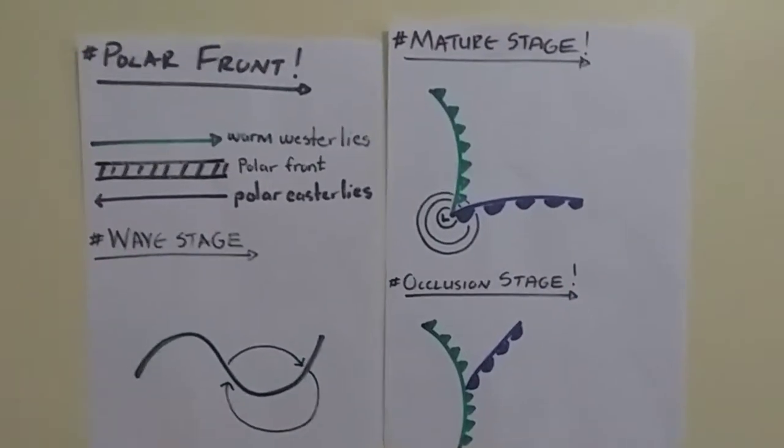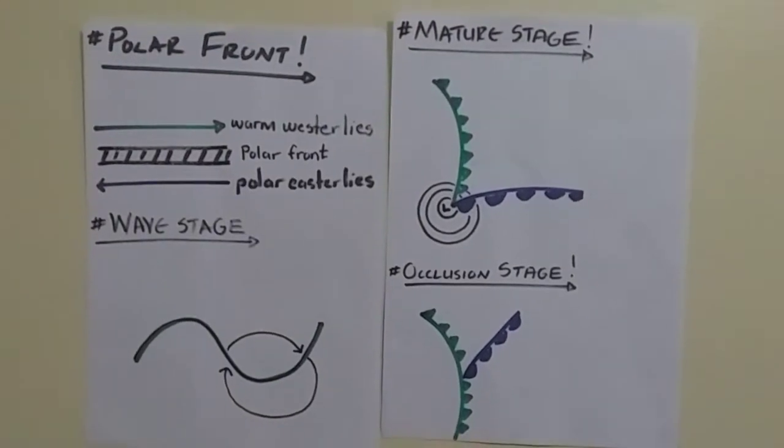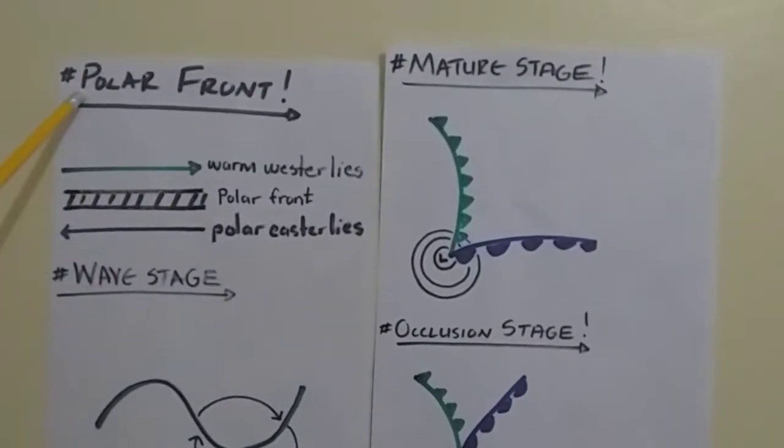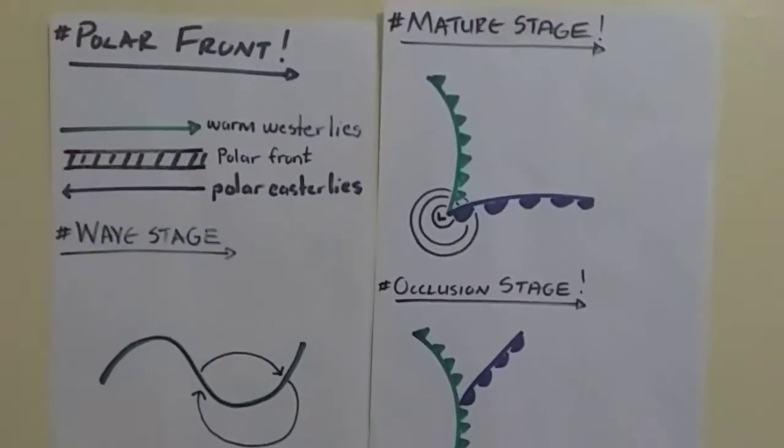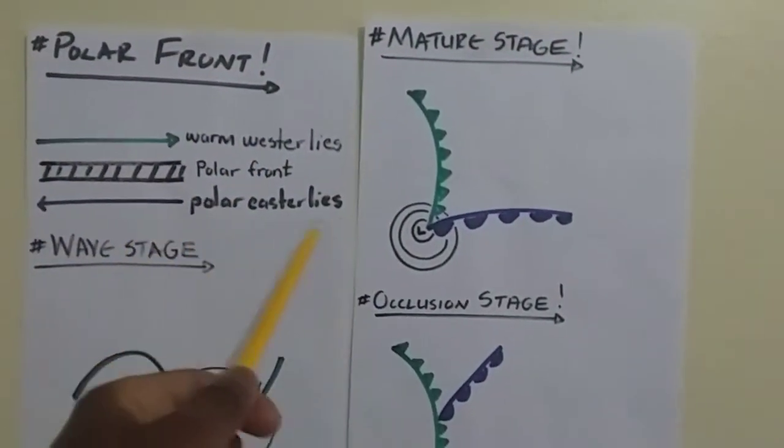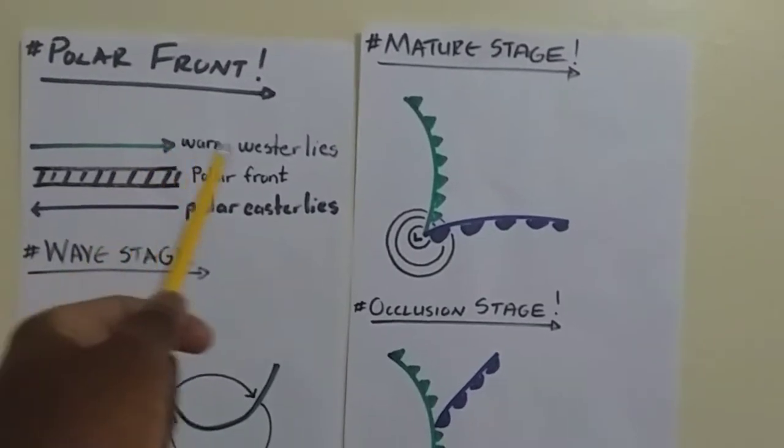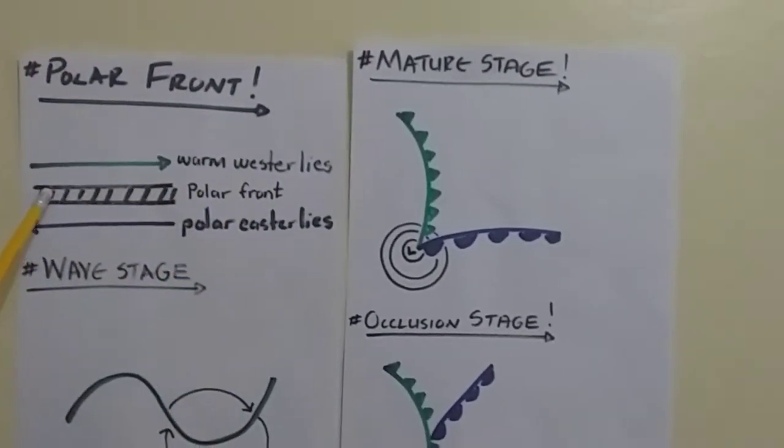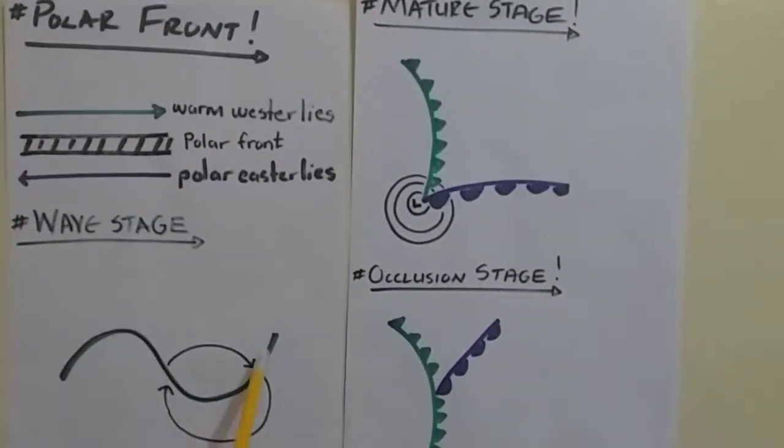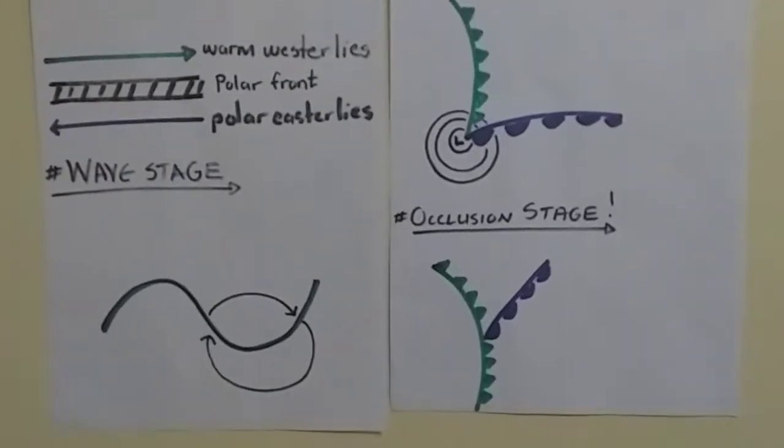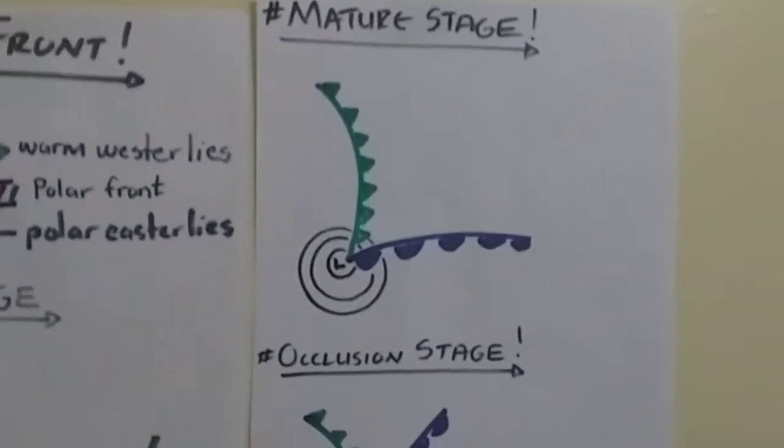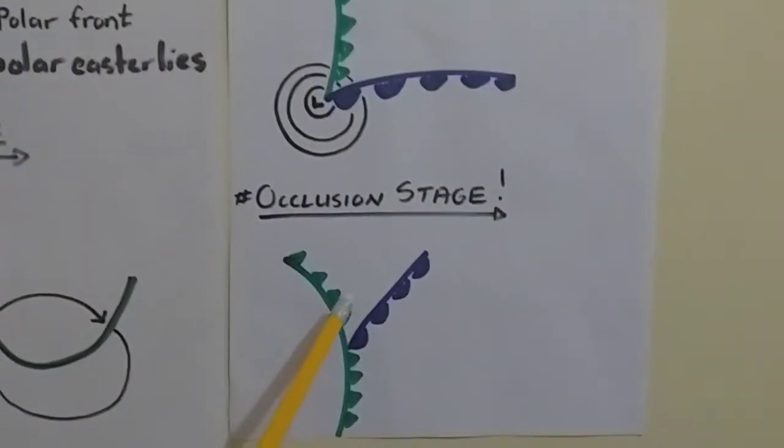And then, how to identify the developmental stages of a mid-latitude cyclone. So, here are diagrams. We see the first, the polar front. There is the warm westerlies, the polar easterlies, and then the polar front. Right. And then the next one is the wave stage. It's the wave stage because of this wave, which makes it pretty obvious. And then the third one would be the mature stage, and then the occlusion stage.